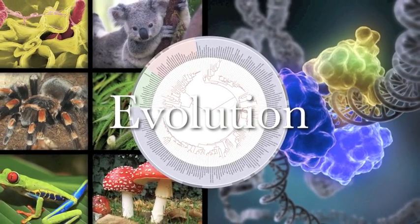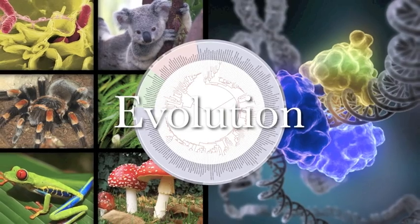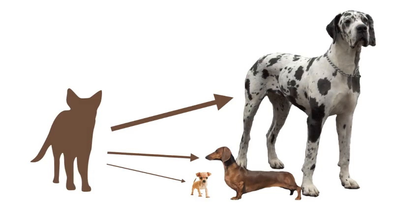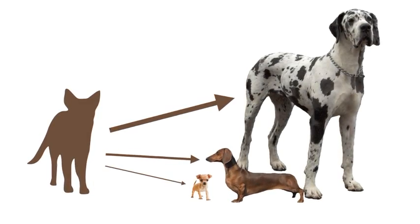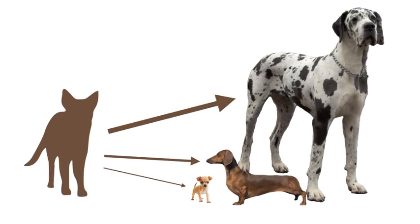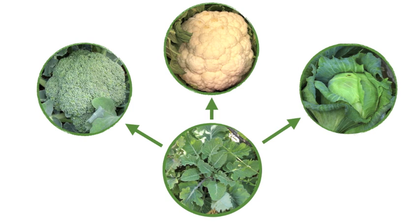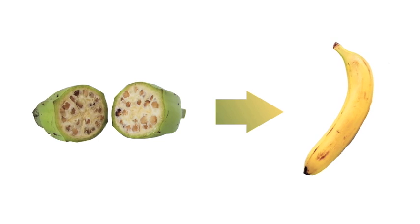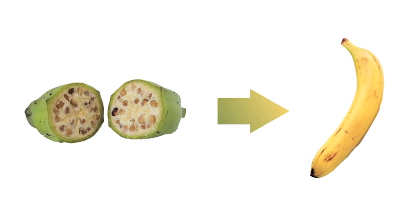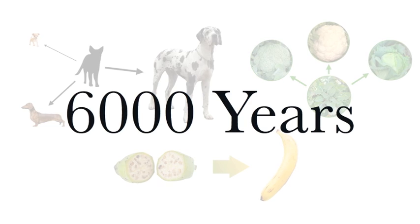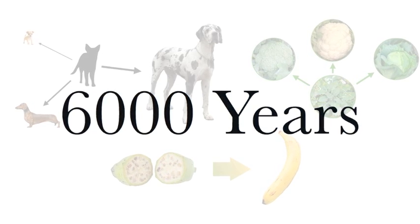To deny evolution is to deny the very observations of recorded history, where we have seen pie dogs evolve into chihuahuas, dachshunds, and Great Danes, where we have seen weeds evolve into broccoli, cauliflower, and cabbage, where we have seen wild fruit filled with rock-hard seeds evolve into elegant bananas, all in a period of just 6,000 years.